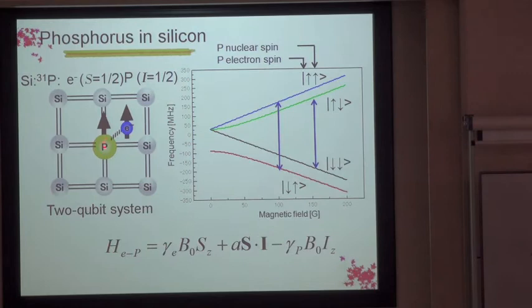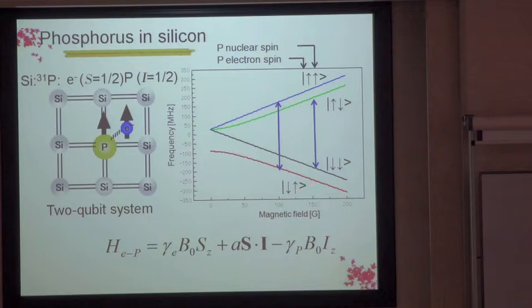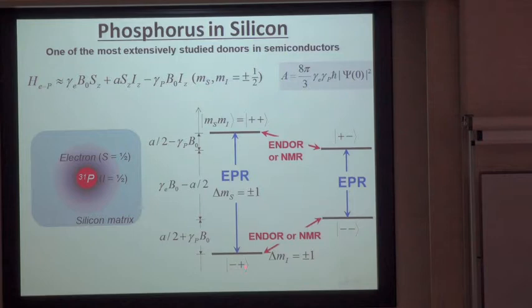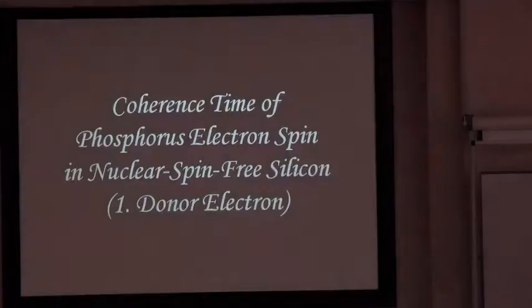Because phosphorus has one nuclear spin and one electron spin, it makes a four-level system under an externally applied magnetic field, with combinations of electron spin up or down and nuclear spin up or down. We can study the behavior of phosphorus by irradiating the energy corresponding to electron paramagnetic resonance, and also the transition between levels corresponding to NMR, or sometimes called ENDOR.